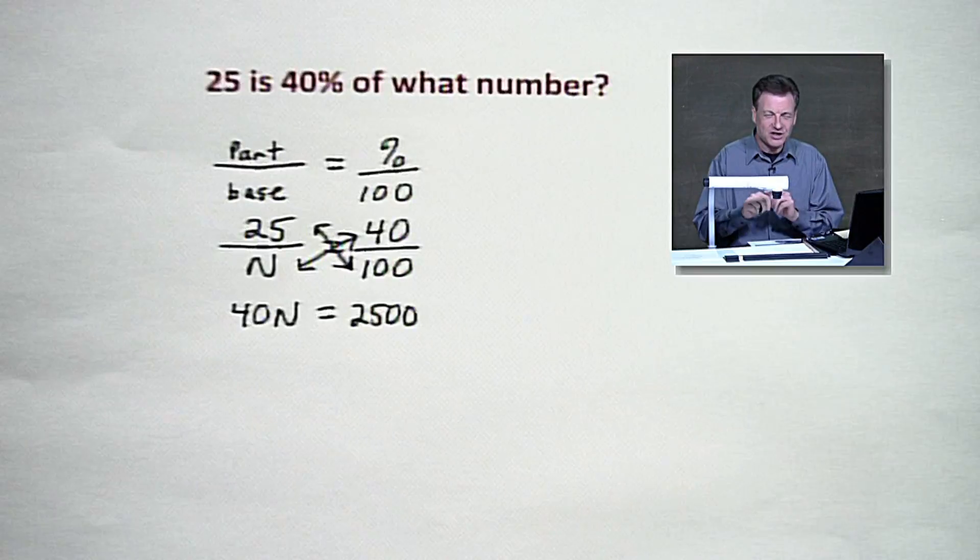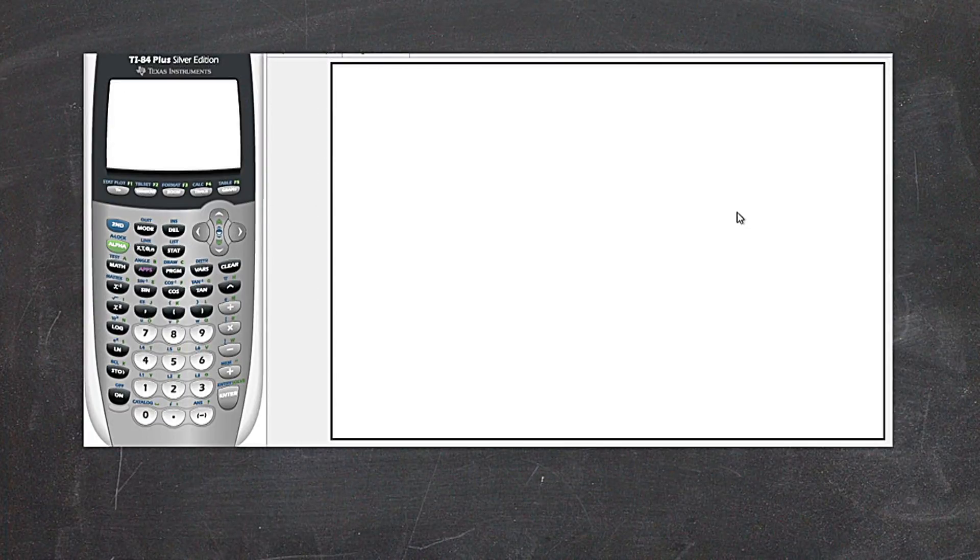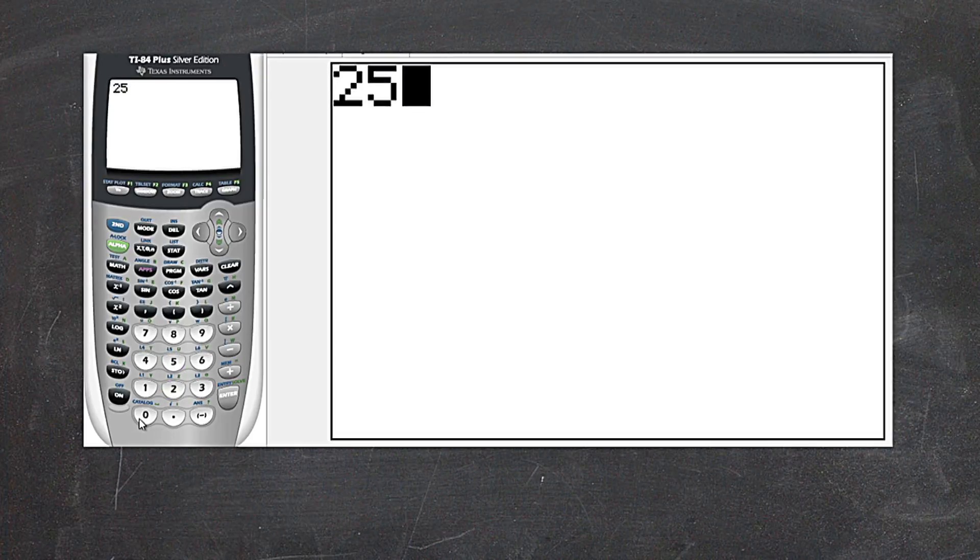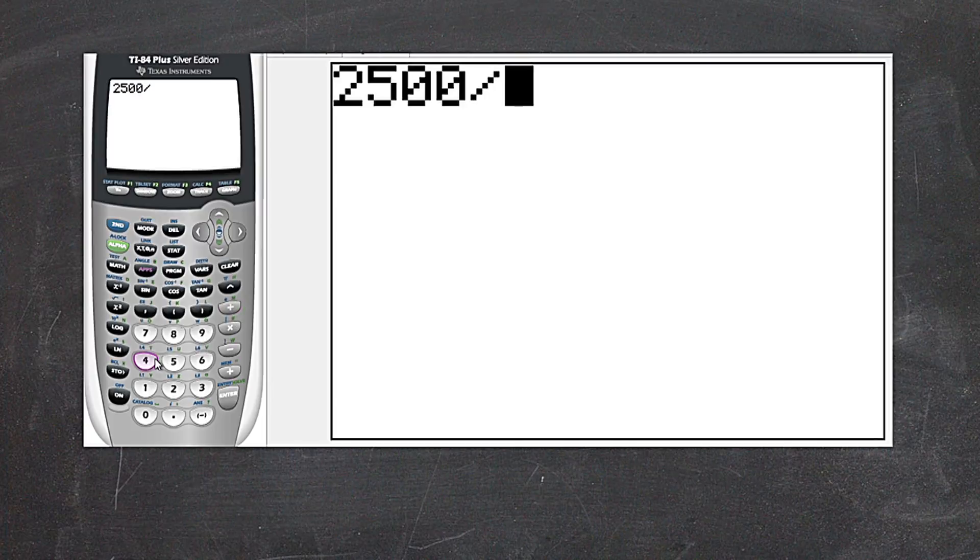And now, guys, we'll go to the calculator. Let's take it from here so we can move along. We're going to divide 2,500 by 40 and see what it gives us.